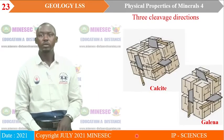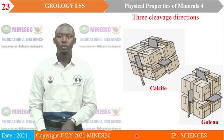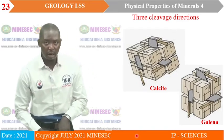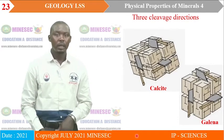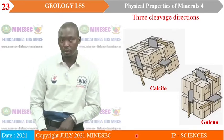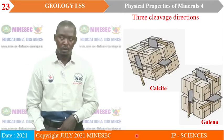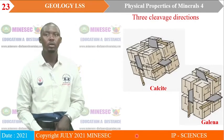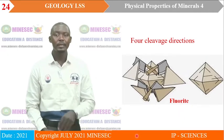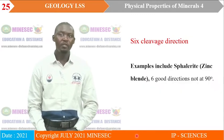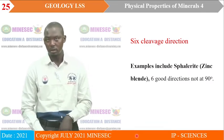For three cleavage directions, we have calcite and galena. For galena, the mineral cleaves in three directions that meet at right angles, producing small cubes. For calcite, the intersection of the cleavage planes is not perpendicular, ending up producing rhombs — rhombic cleavage. Minerals with four cleavage directions: we take the example of fluorite, as indicated on the image. We also have minerals with six cleavage directions: sphalerite or zinc blende, whose cleavage planes do not intersect at right angles.